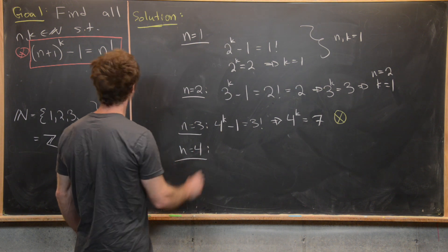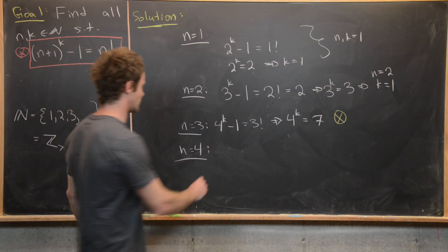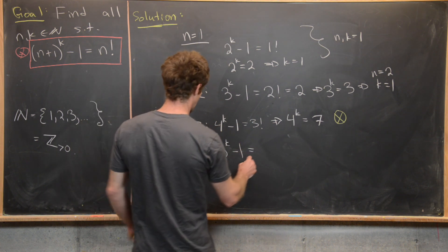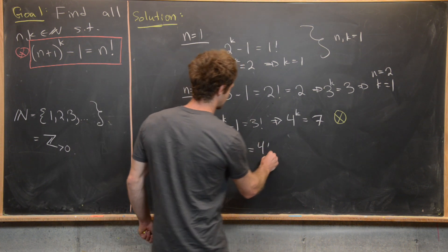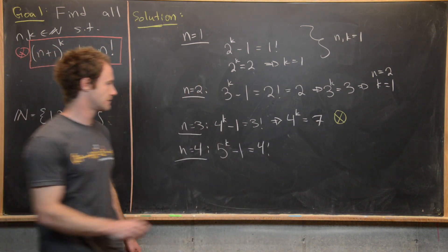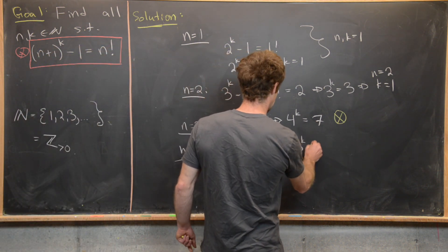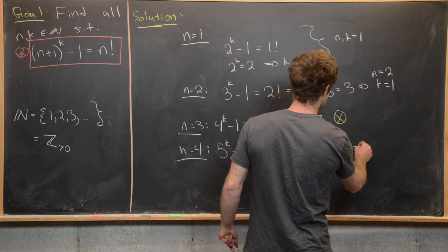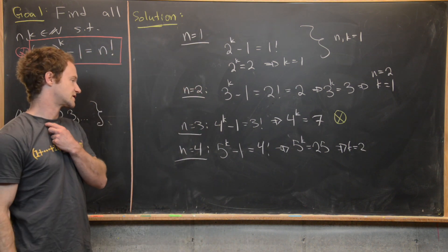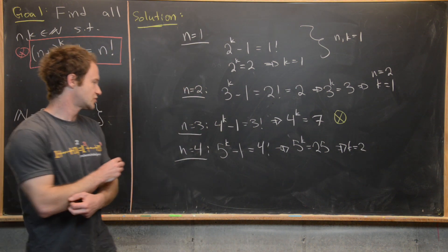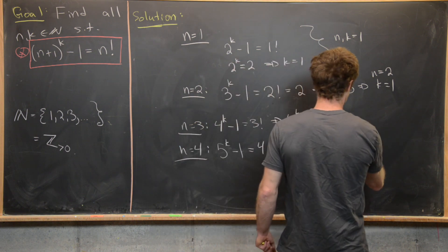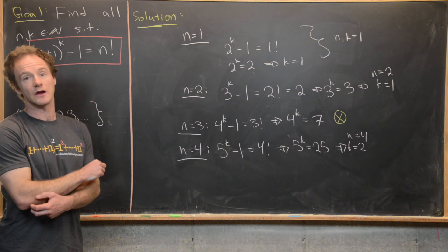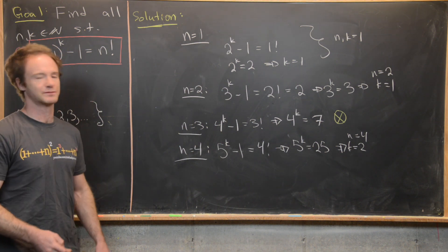For n=4, we have 5^k - 1 = 4! = 24, so 5^k = 25, which gives k=2. That's another solution: (n, k) = (4, 2). So we've found three solutions so far, and in fact these are the only solutions, which we'll prove now.